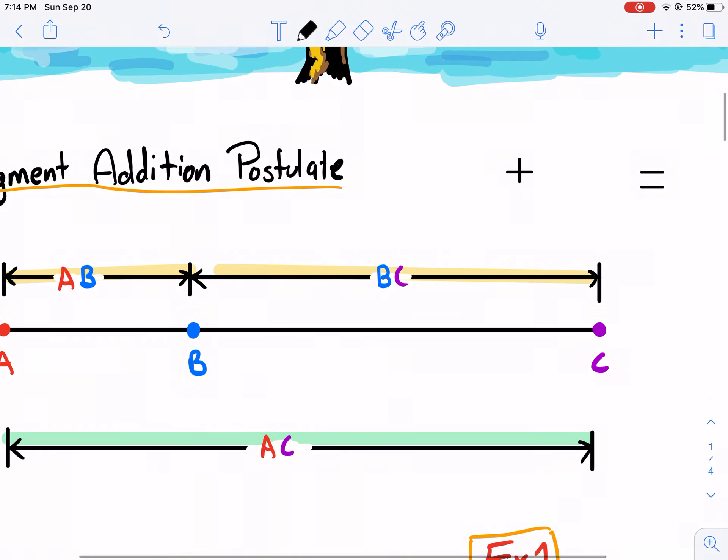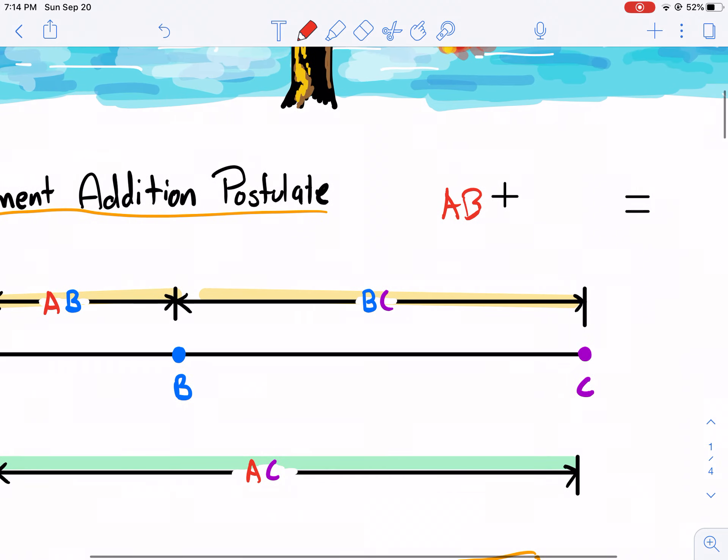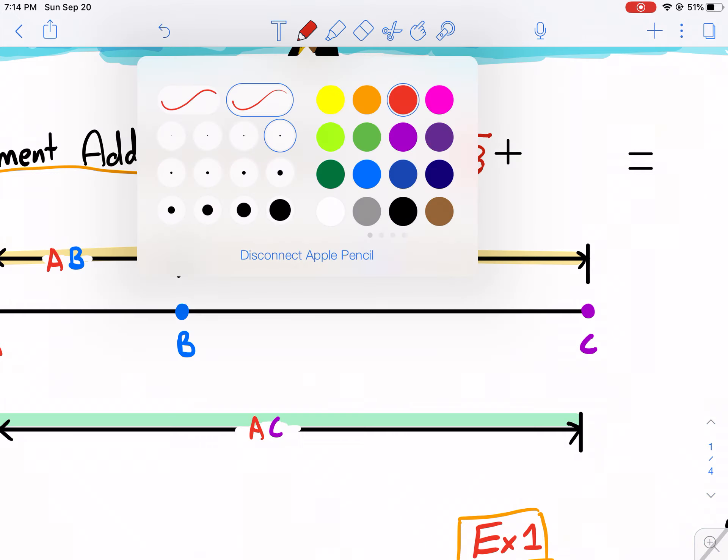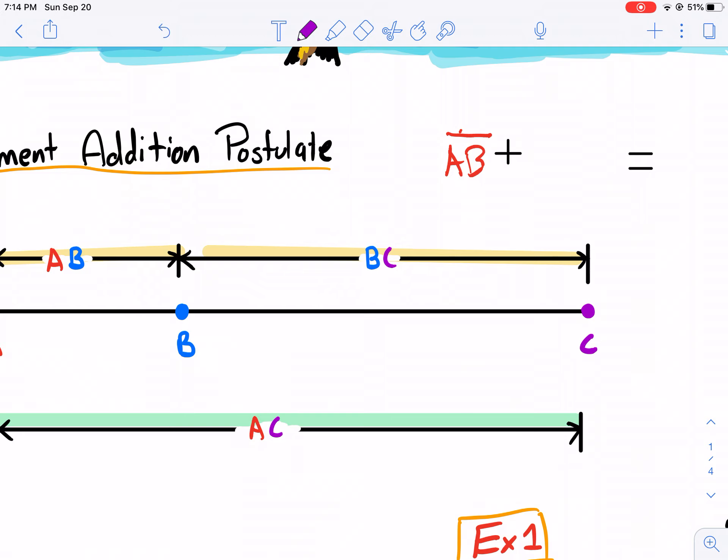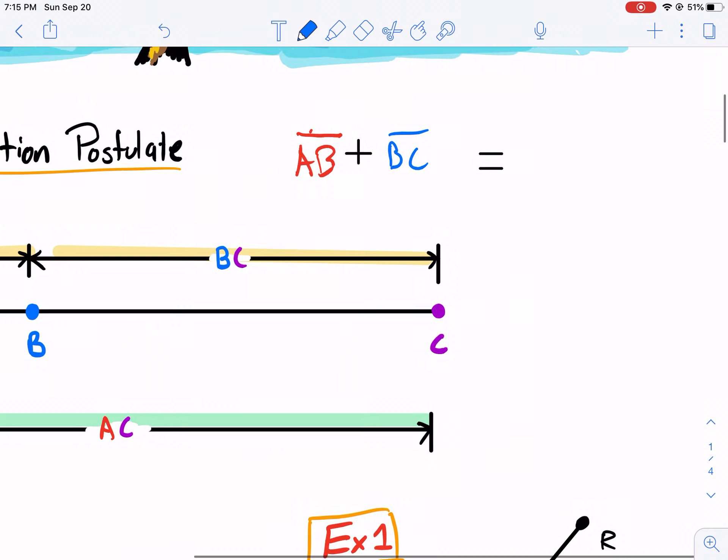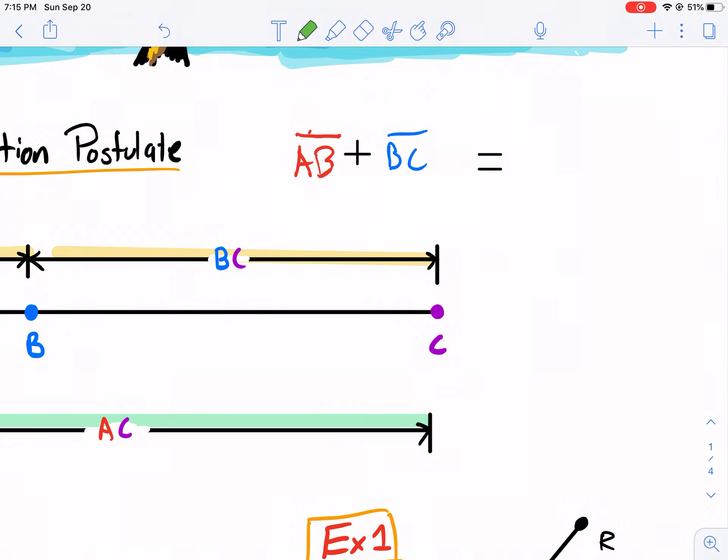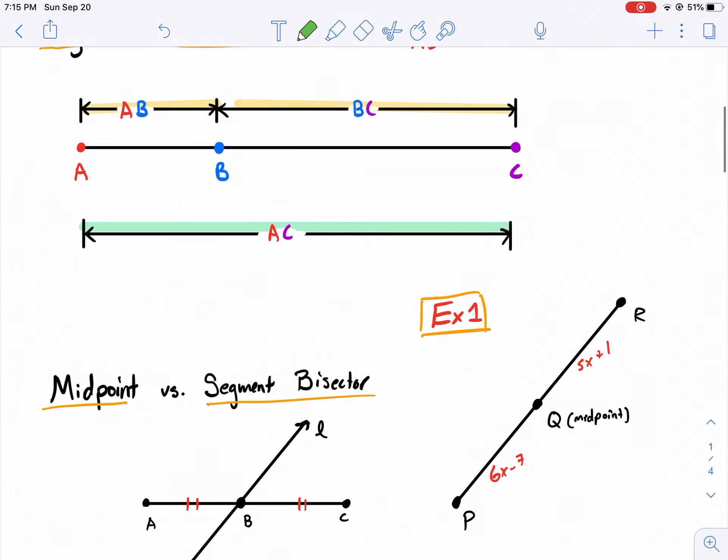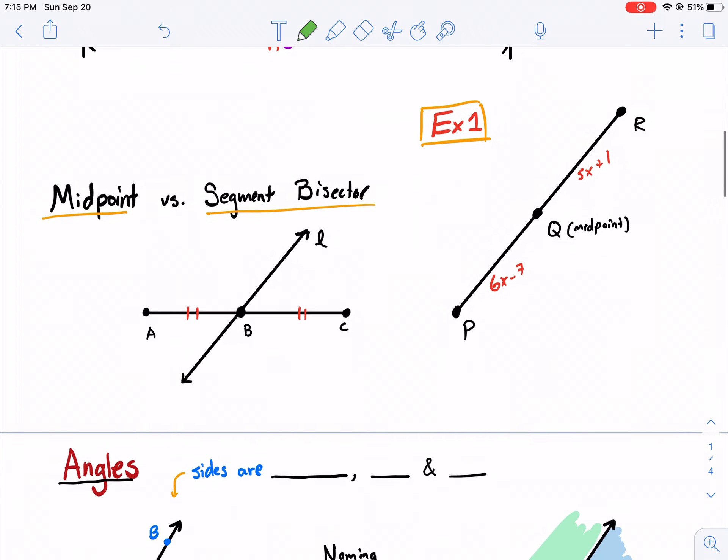Now, the segment addition postulate is fairly simple. It just says that this green segment, the long segment, is the sum of the smaller segments that are within it. So we can write here that segment AB and then we have BC, and that is going to equal AC. And that's the segment addition postulate. Pretty simple. It's just the sum of two smaller segments make up the bigger segment.